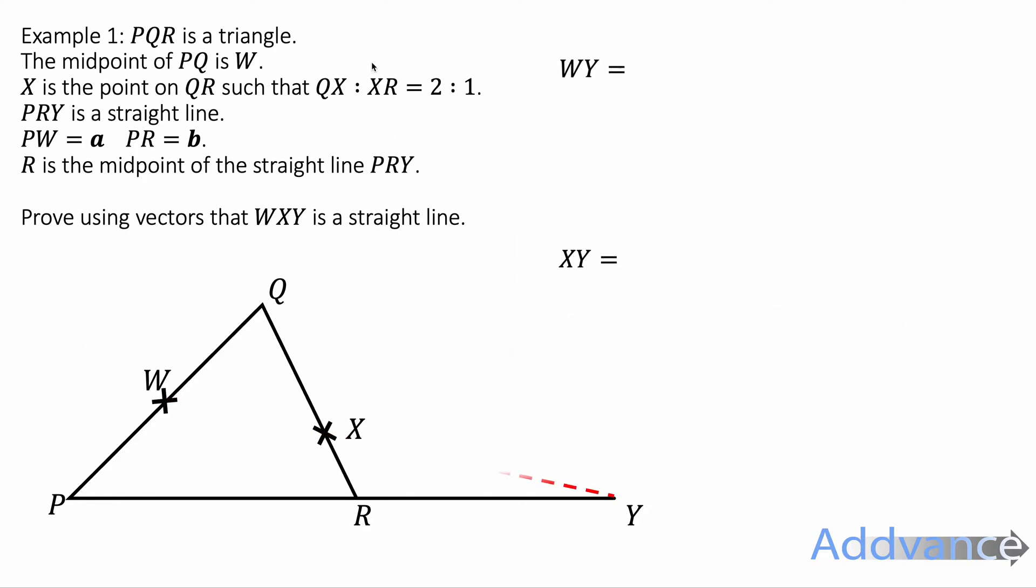In this question we are given that the ratio between Q and X and X and R is 2 to 1 and also that the vector PW is a, PR is b. We're going to find the vector W to Y and also the vector X to Y because these are two pairs of points that lie on this line and we're going to show that they both go through the point Y and also they are parallel to each other and that will be sufficient to prove that line on a straight line.